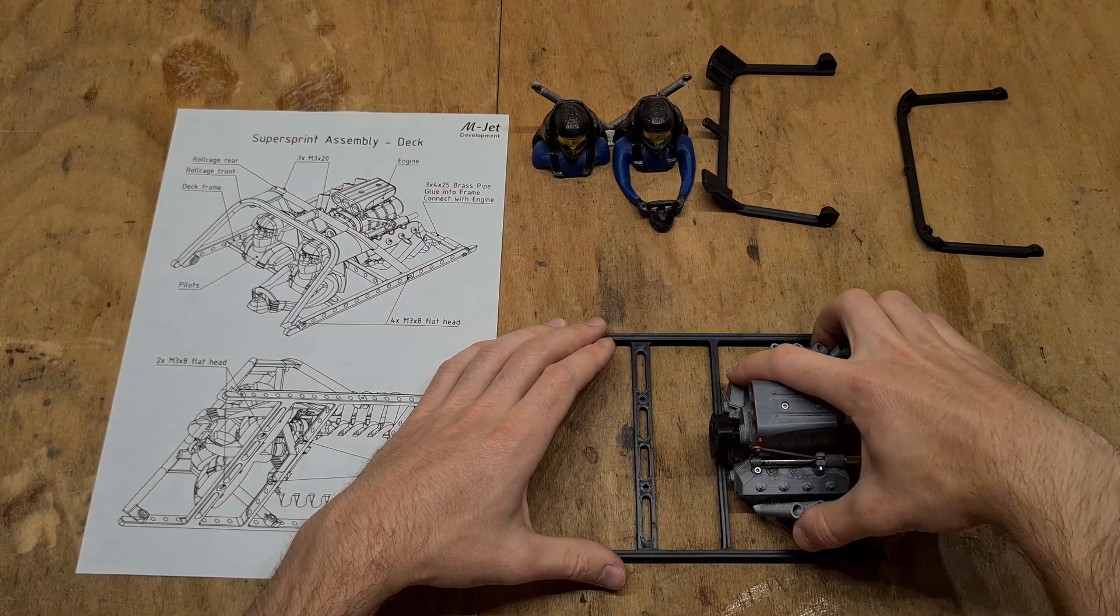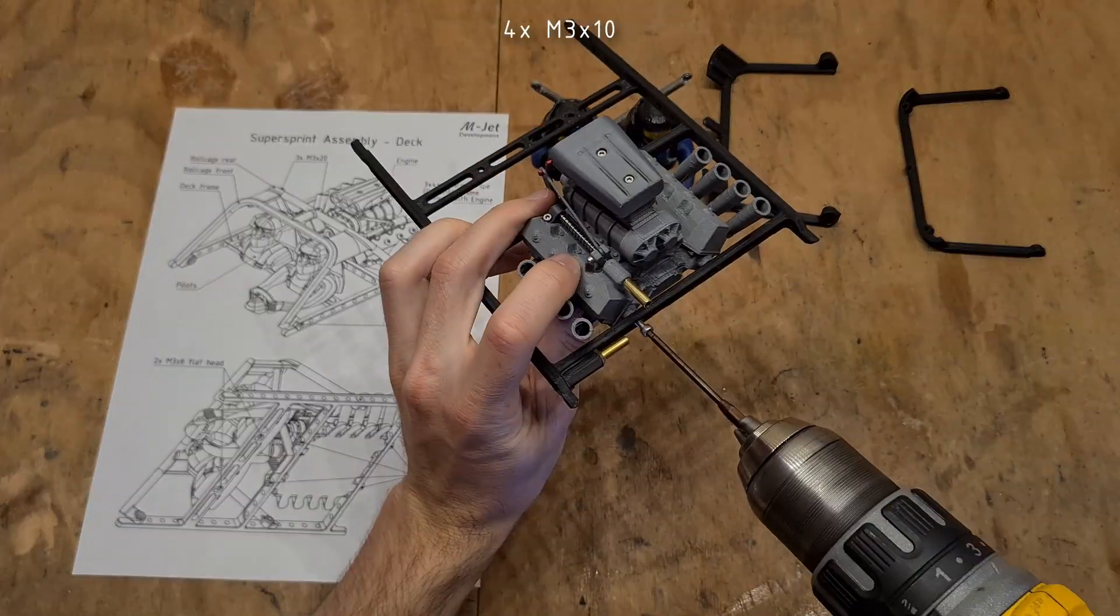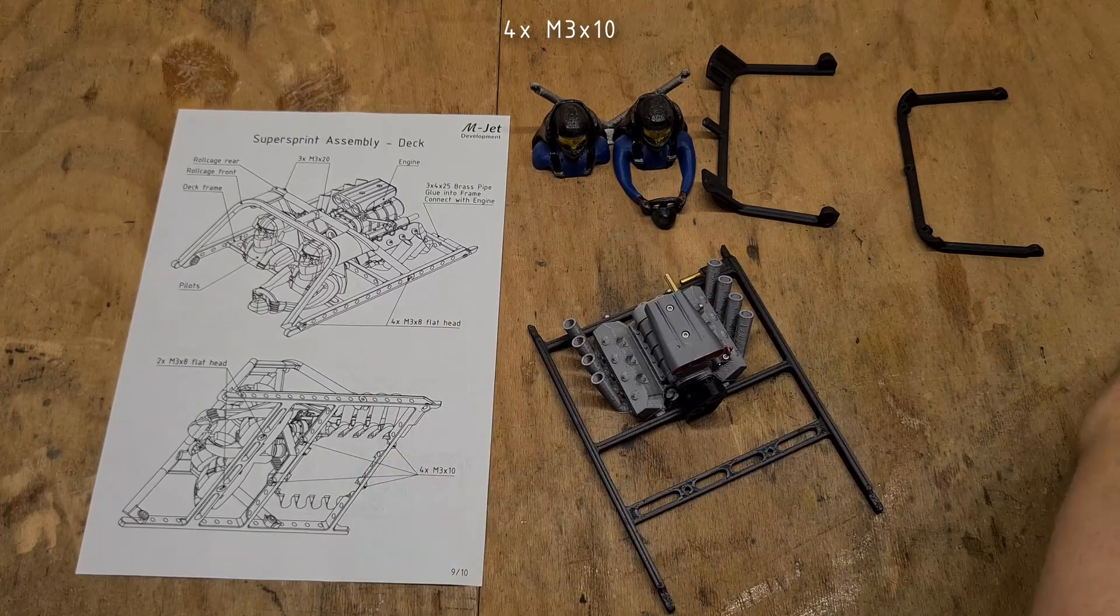From now it's just a matter of connecting all parts to the new frame. The engine gets connected using four M3x10s.